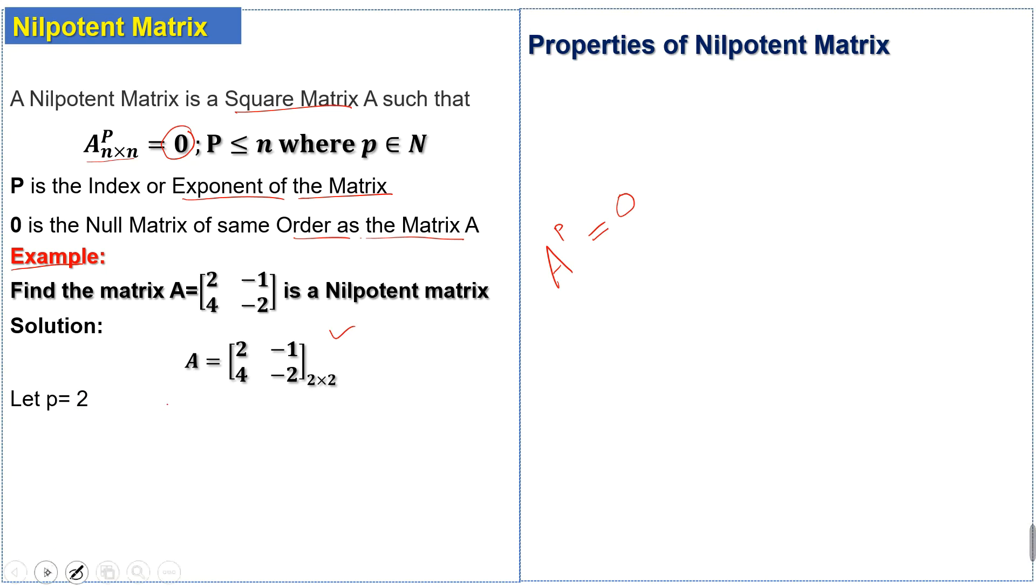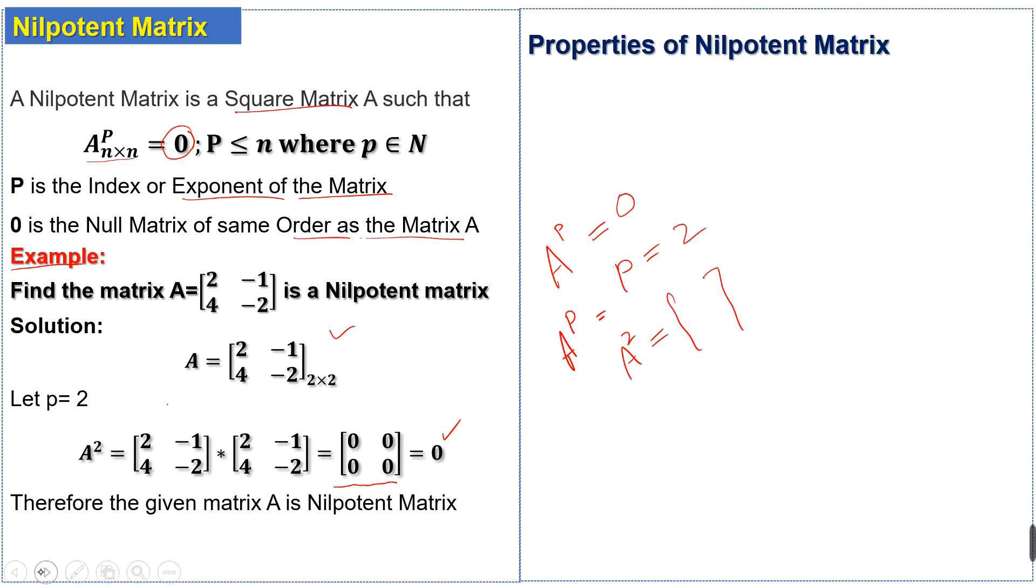A power P means we have taken P equal to 2. So this will be A squared, which means we multiply the matrix A with itself and this gives us a null matrix. Therefore the given matrix is a nilpotent matrix. When the matrix gives us a null matrix, this means the given matrix is nilpotent.